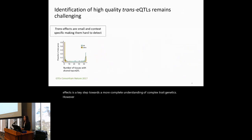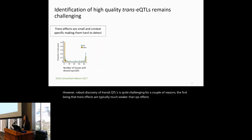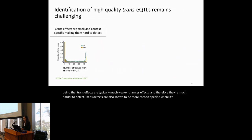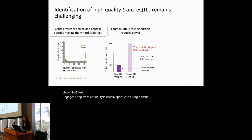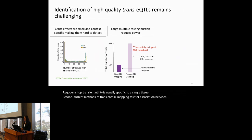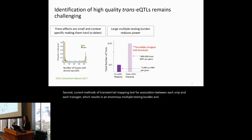Robust discovery of trans-EQTLs is challenging for several reasons. First, trans-effects are typically much weaker than cis-effects and harder to detect. Trans-effects are also more context-specific — in GTEx, a gene's top trans-EQTL is usually specific to a single tissue. Second, current methods test for association between each SNP and each trans-gene, resulting in a multiple testing burden requiring correction for over a billion tests.